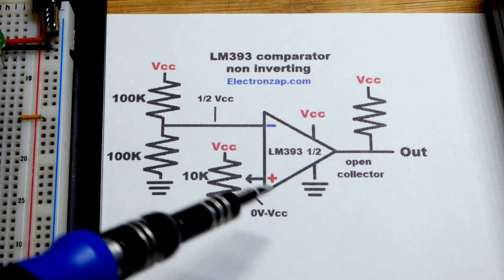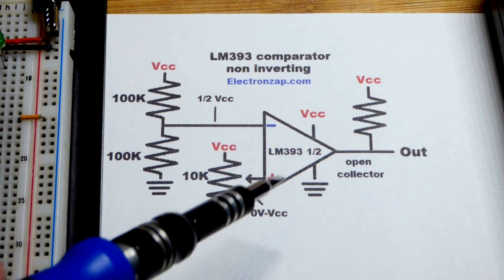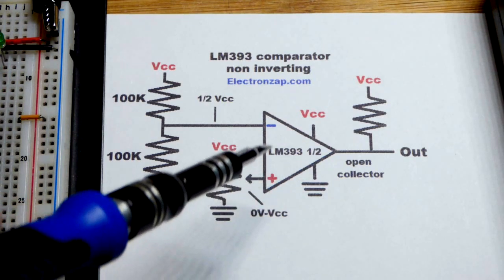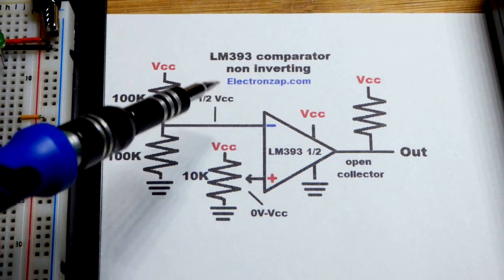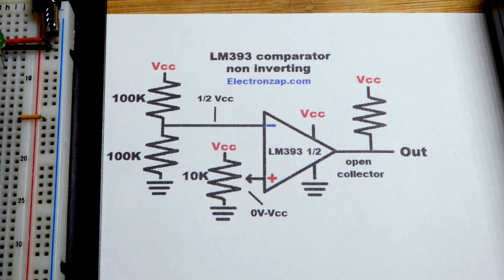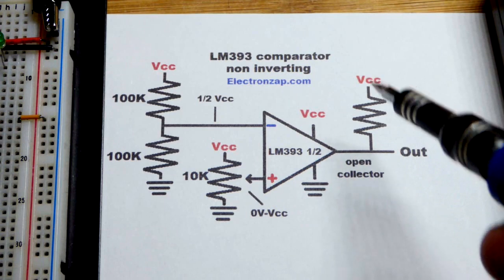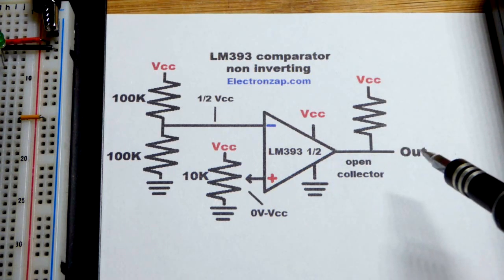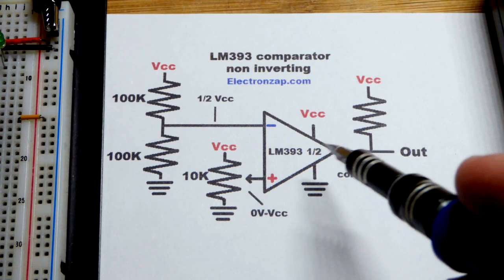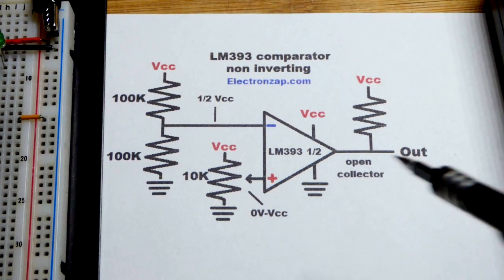They use the same schematic symbol for op amps and comparators, but this only works as a comparator. We're going to wire it as non-inverting and this does not output a high signal. We need a pull-up resistor for the high signal, but it will connect to ground for a low signal.